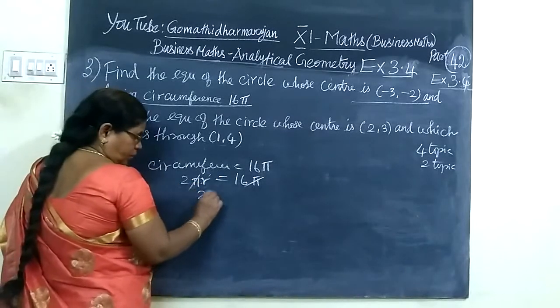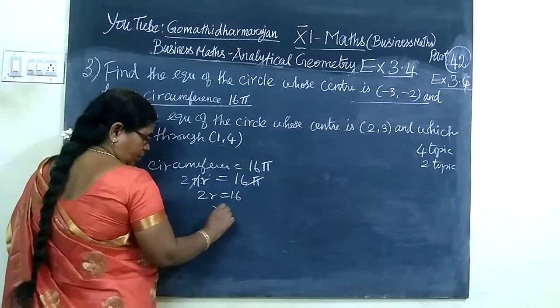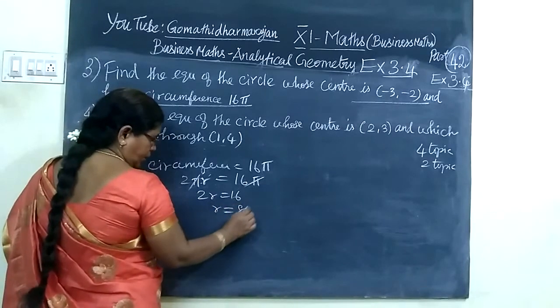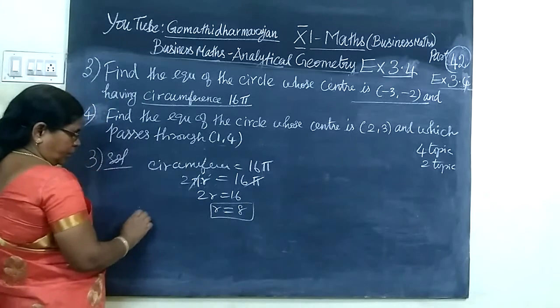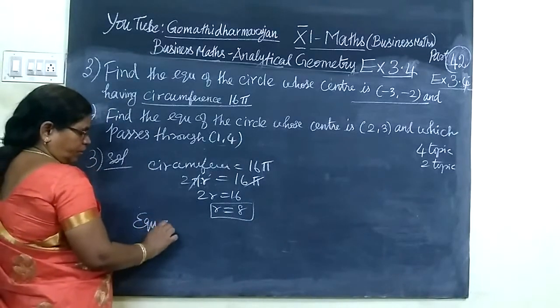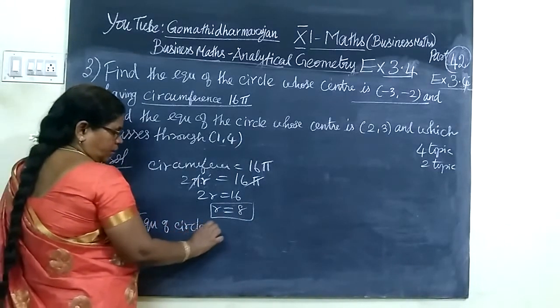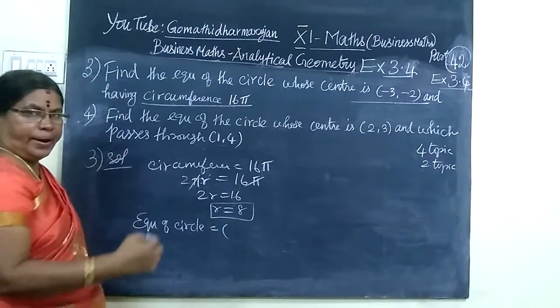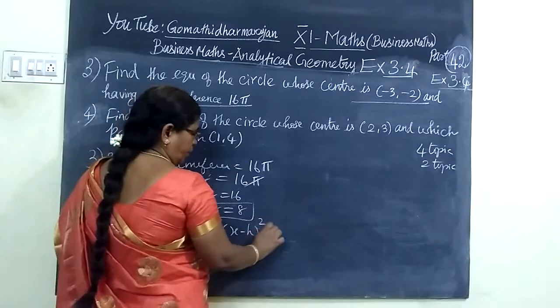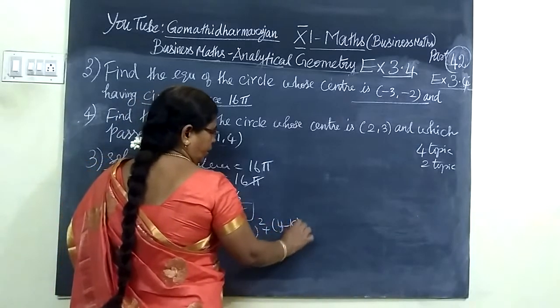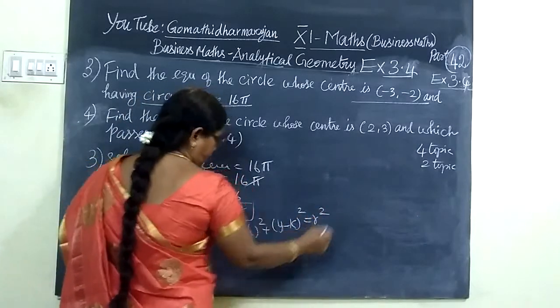Therefore, radius equals 8. We can write the equation. The standard form is (x - h)² + (y - k)² = r².